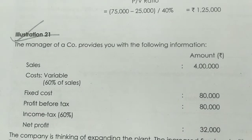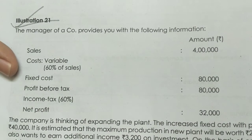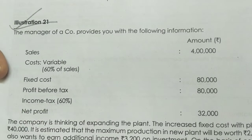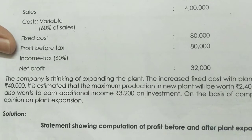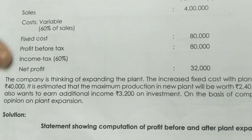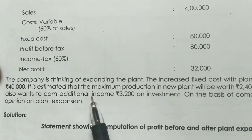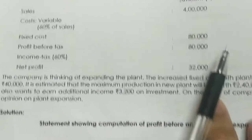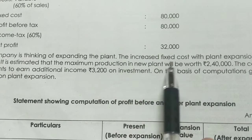Next is Illustration 21. The manager of a company provides the following information: variable cost, fixed cost, profit before tax, income tax, and net profit. The company is thinking of expanding the plant, and the increase in fixed cost with plant expansion will be 40,000.